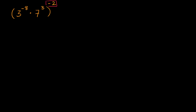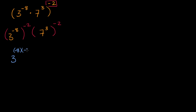So this is going to be the same thing as three to the negative eight, and then that to the negative two, times seven to the third to the negative two. And if I want to simplify this, three to the negative eight to the negative two — we have the other exponent property that if you're raising to an exponent and then raising that whole thing to another exponent, you can just multiply the exponents. So this is going to be three to the negative eight times negative two power.